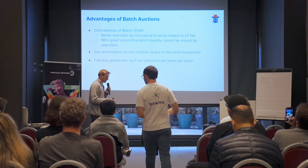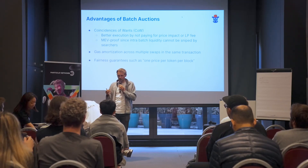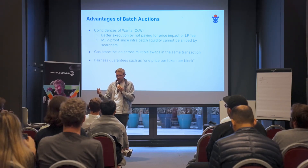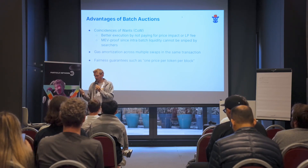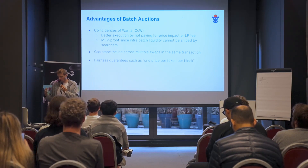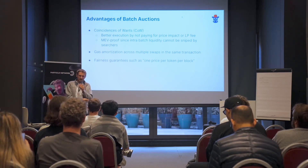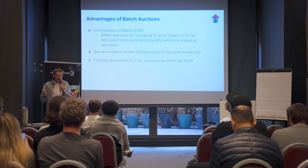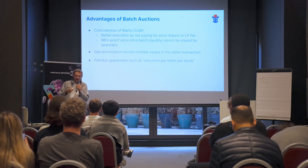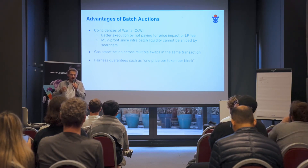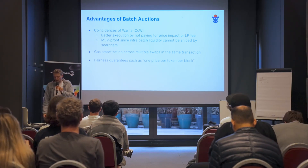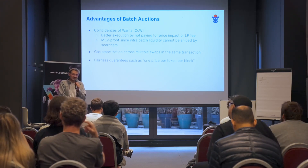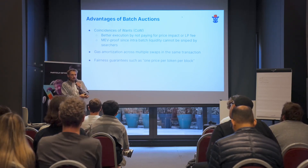The last thing that batch auctions allow is imposing additional fairness guarantees on the execution of swaps. One fairness guarantee that CoW Protocol cares deeply about is a uniform clearing price: if people trade the same asset within the same block, there's no reason they should be matched at different prices, because blocks are emitted at a single instant in time — there's no first-come-first-served guarantee, it's all arbitrarily ordered by the block proposer or builder.